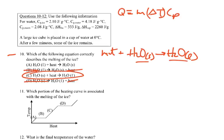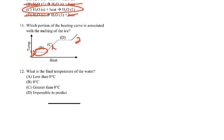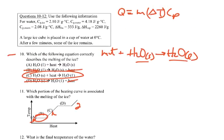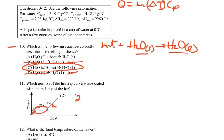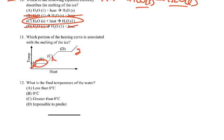Which portion of the heating curve is associated with the melting of ice? Melting is section B — going from solid to liquid. What is the final temperature of the water? Since a large ice cube is placed in water at zero degrees and some ice still remains after a few minutes, as long as ice remains, the temperature stays at zero degrees.